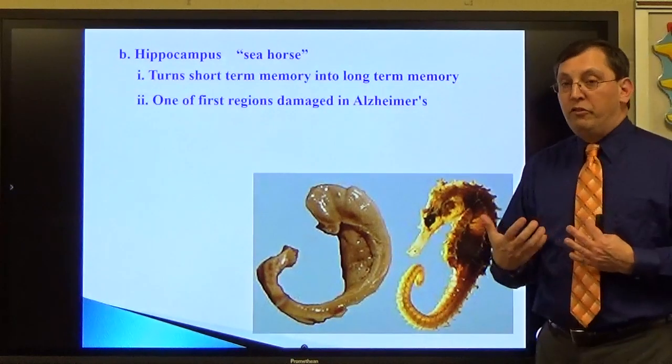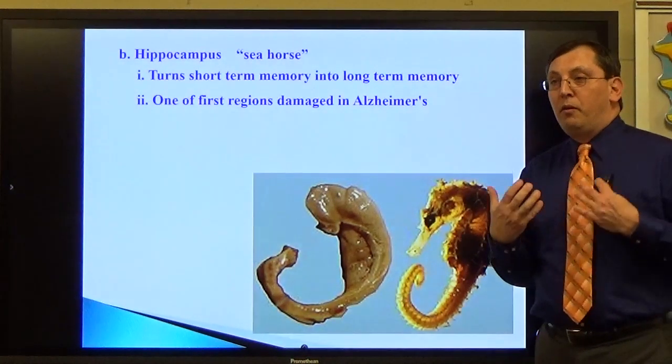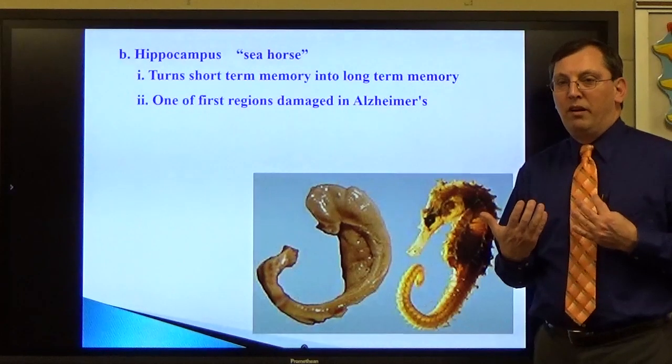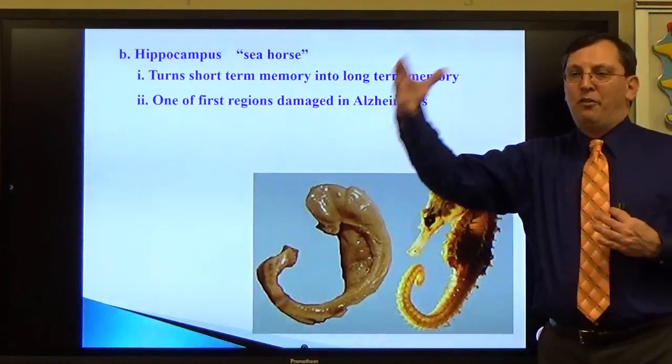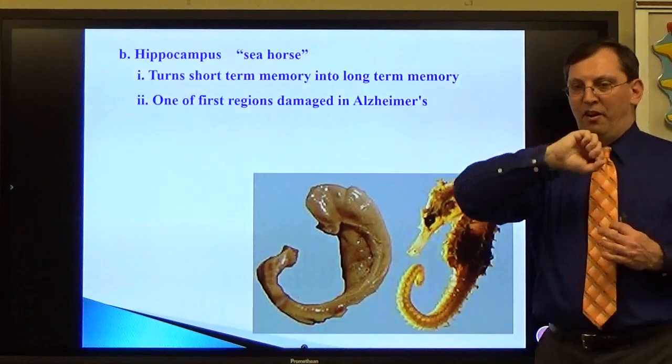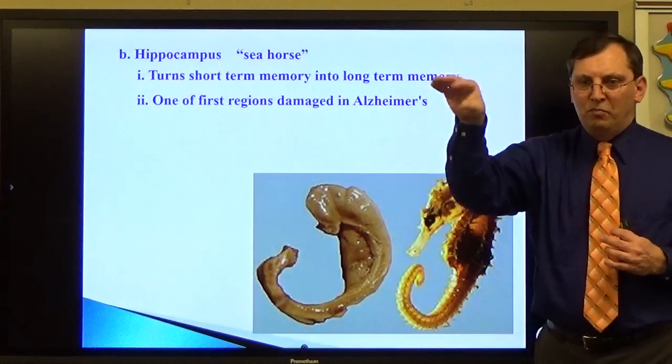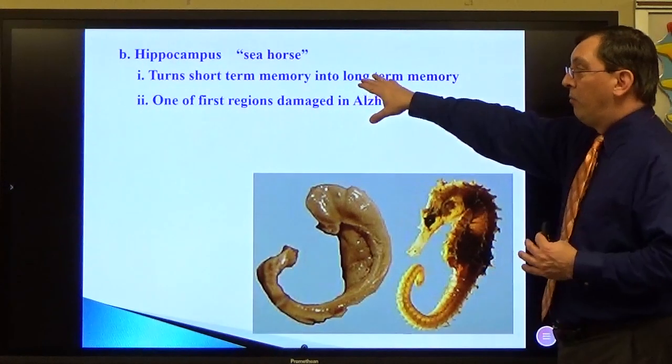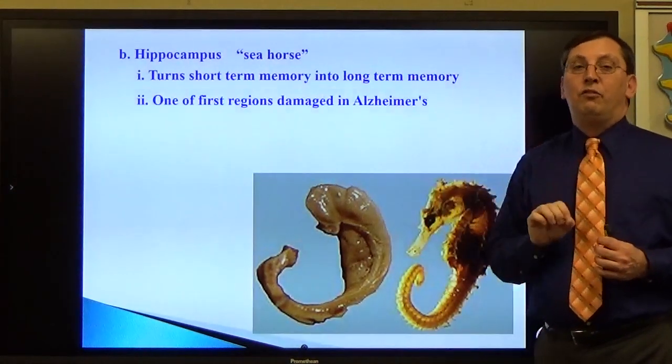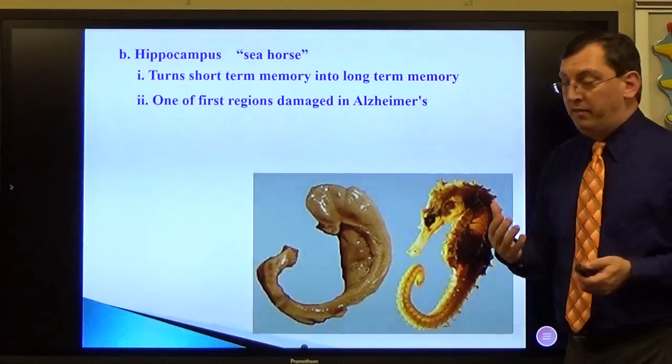It's one of the first regions that's damaged in Alzheimer's. That's why we have the paradox about Alzheimer's where they can't remember things that just happened, but sometimes they'll remember things from 40 years ago. Because those memories are still stored and have been there. They're not new. So they can retrieve those memories but they can't remember what just happened five minutes ago because this part of the brain has been damaged and you can no longer take information and put it into new storage, basically.